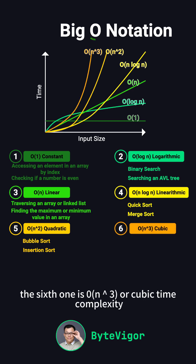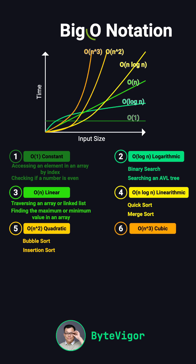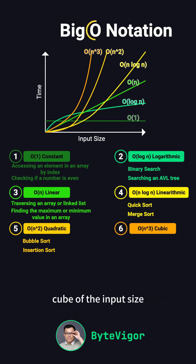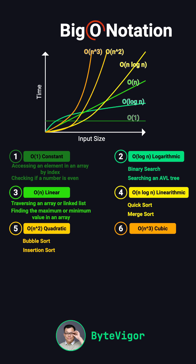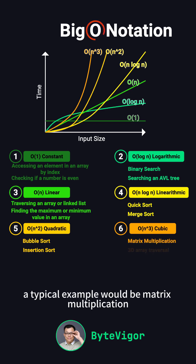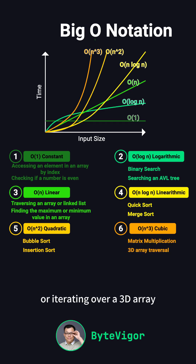The sixth one is O(n³), or cubic time complexity. This means the execution time is proportional to the cube of the input size, and it typically appears in algorithms with triple nested loops. A typical example would be matrix multiplication or iterating over a 3D array.